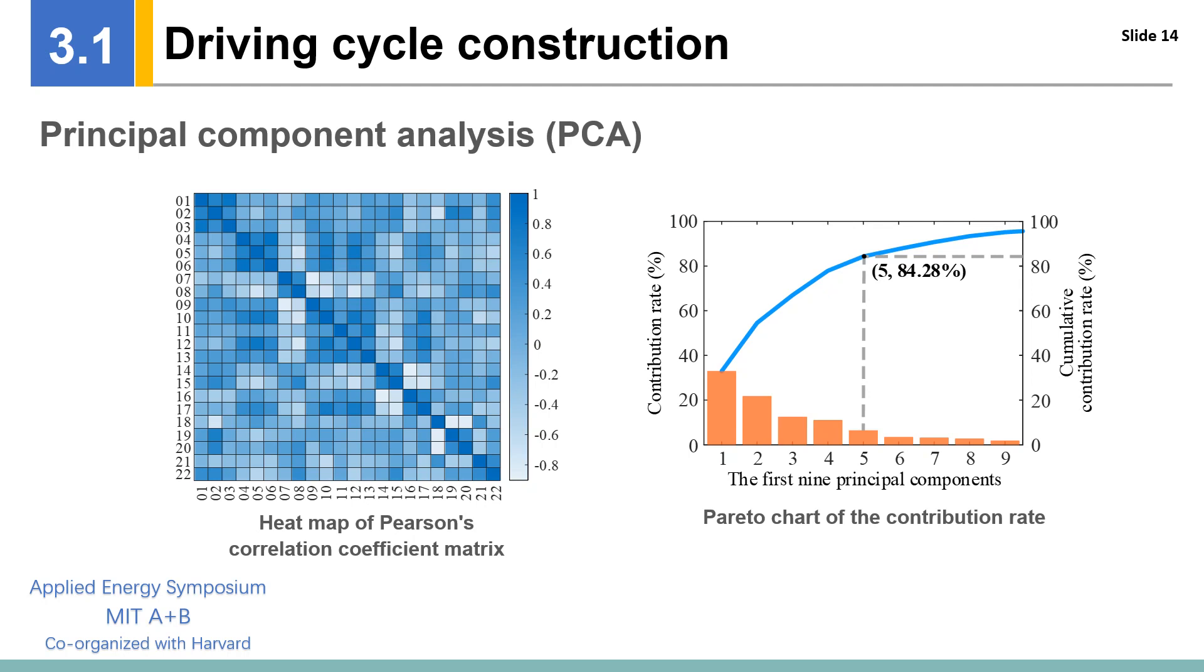After performing PCA, the contribution rate of each principal component can be calculated in this chart. The first five principal components contain more than 80% of the original velocity data information. So, they can replace the original 22 characteristic parameters that can be used to carry out the K-means clustering in the following.